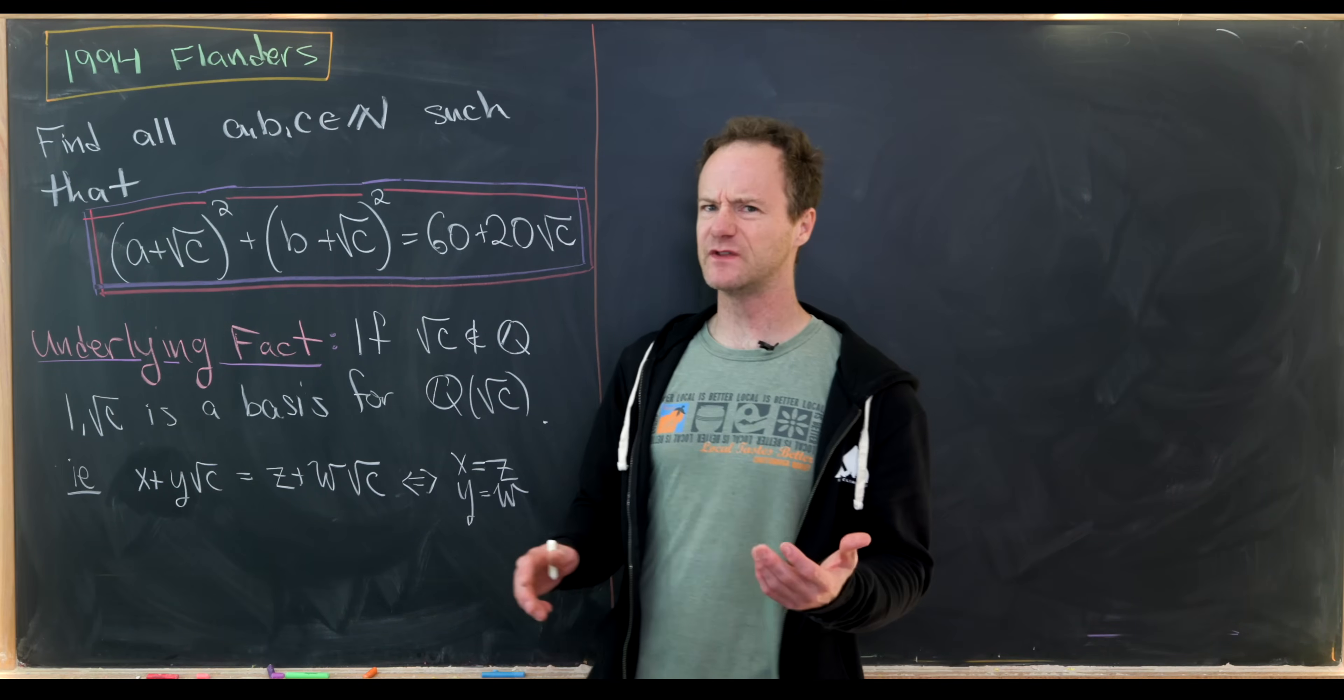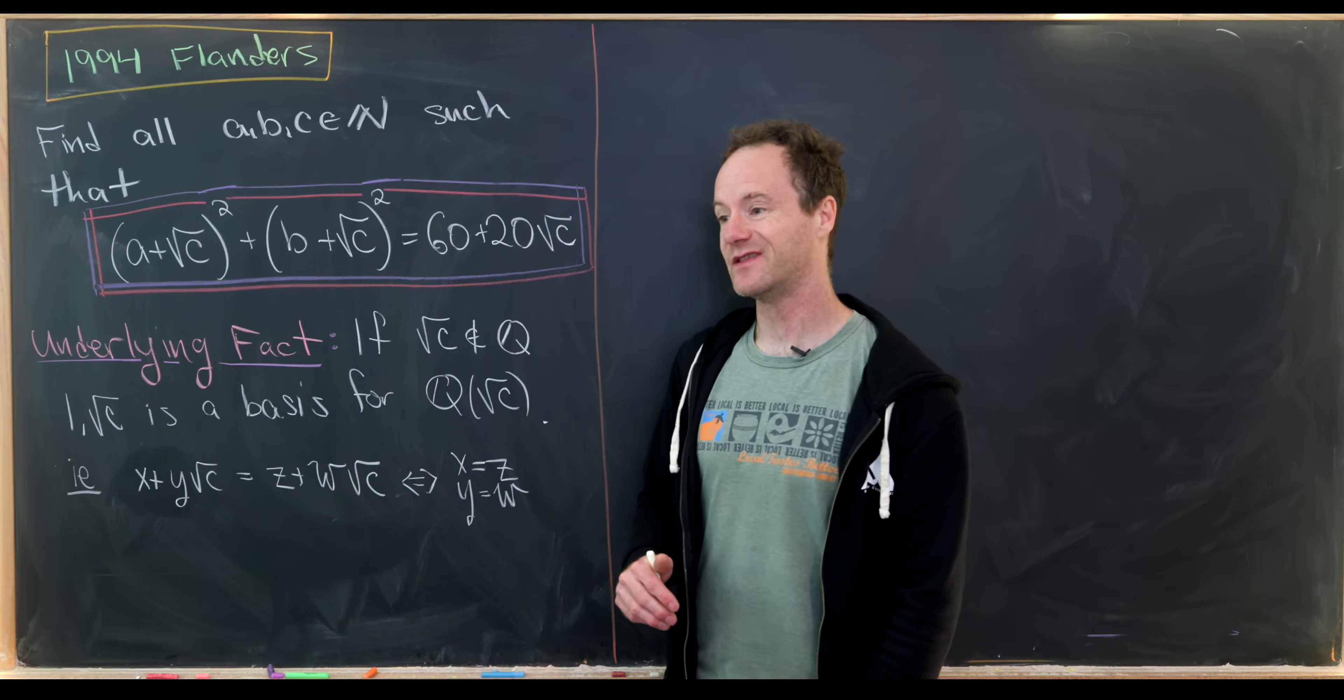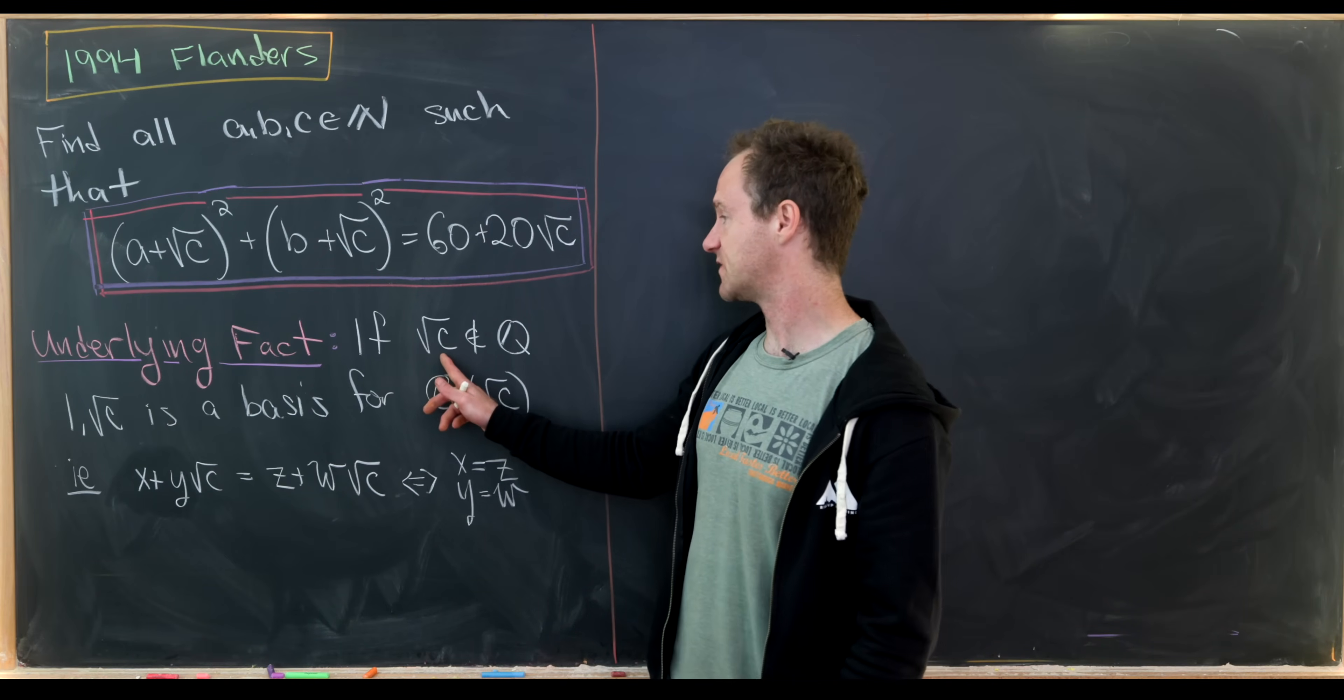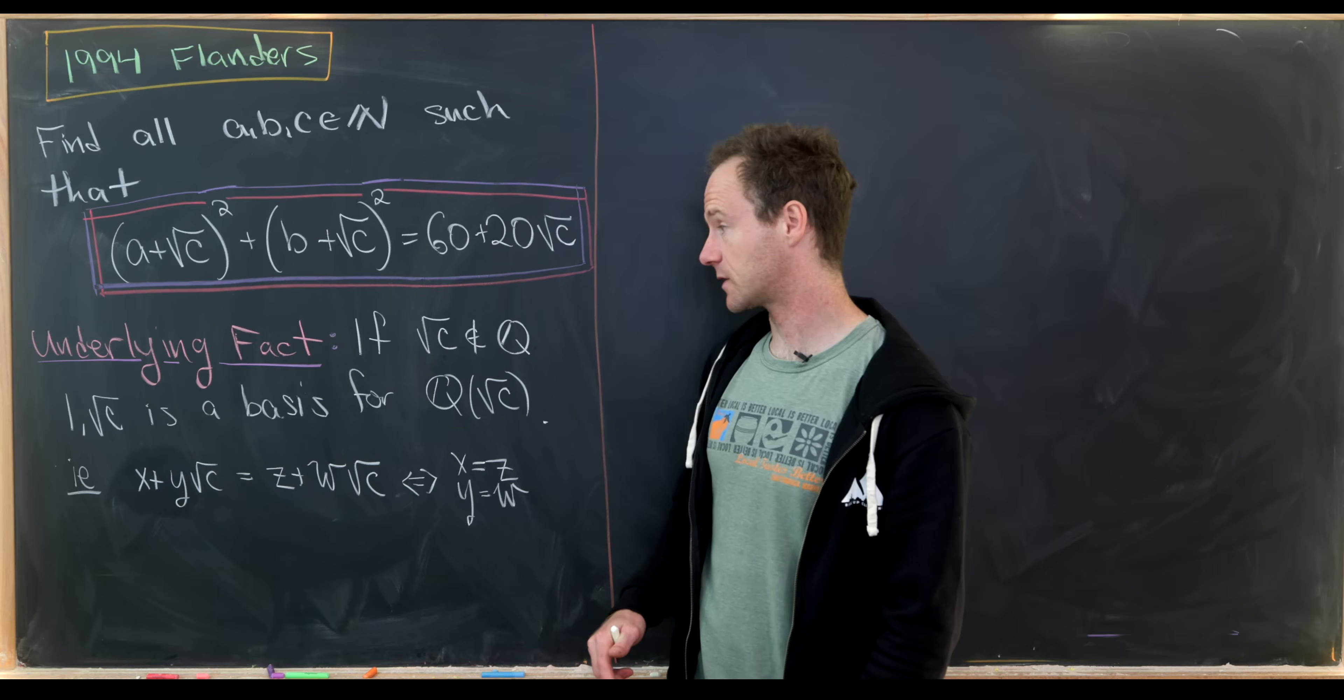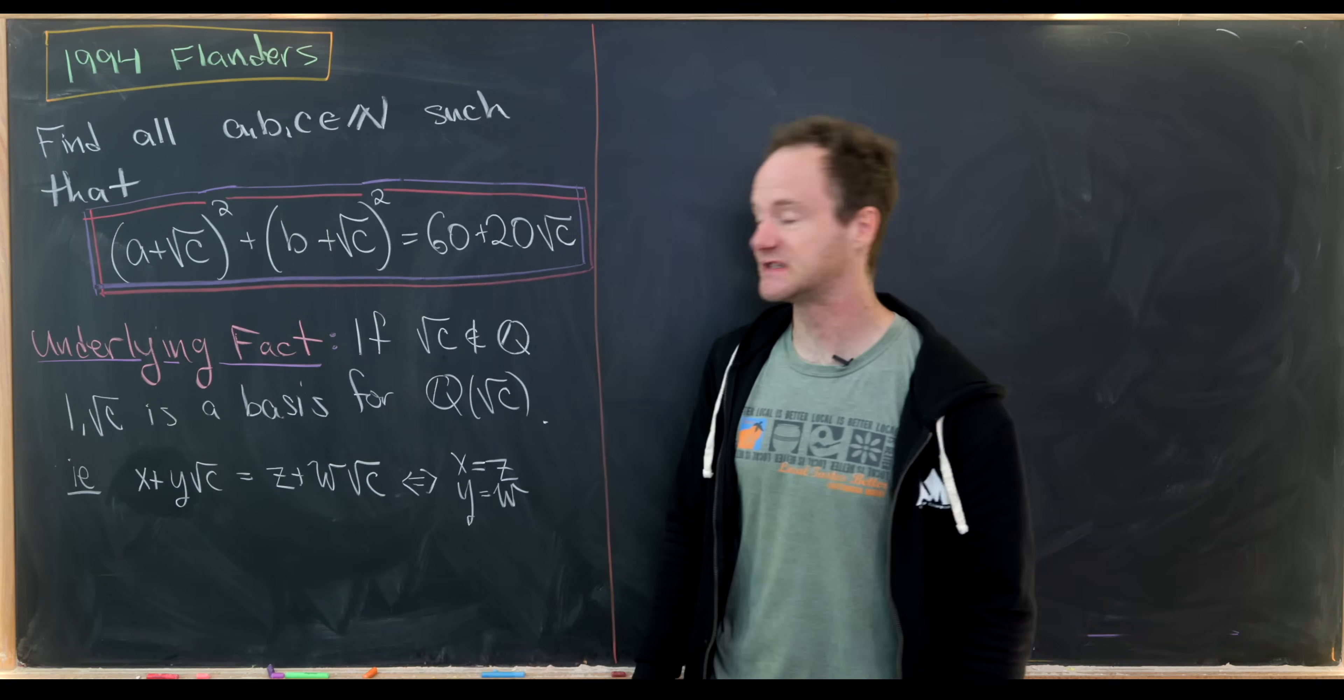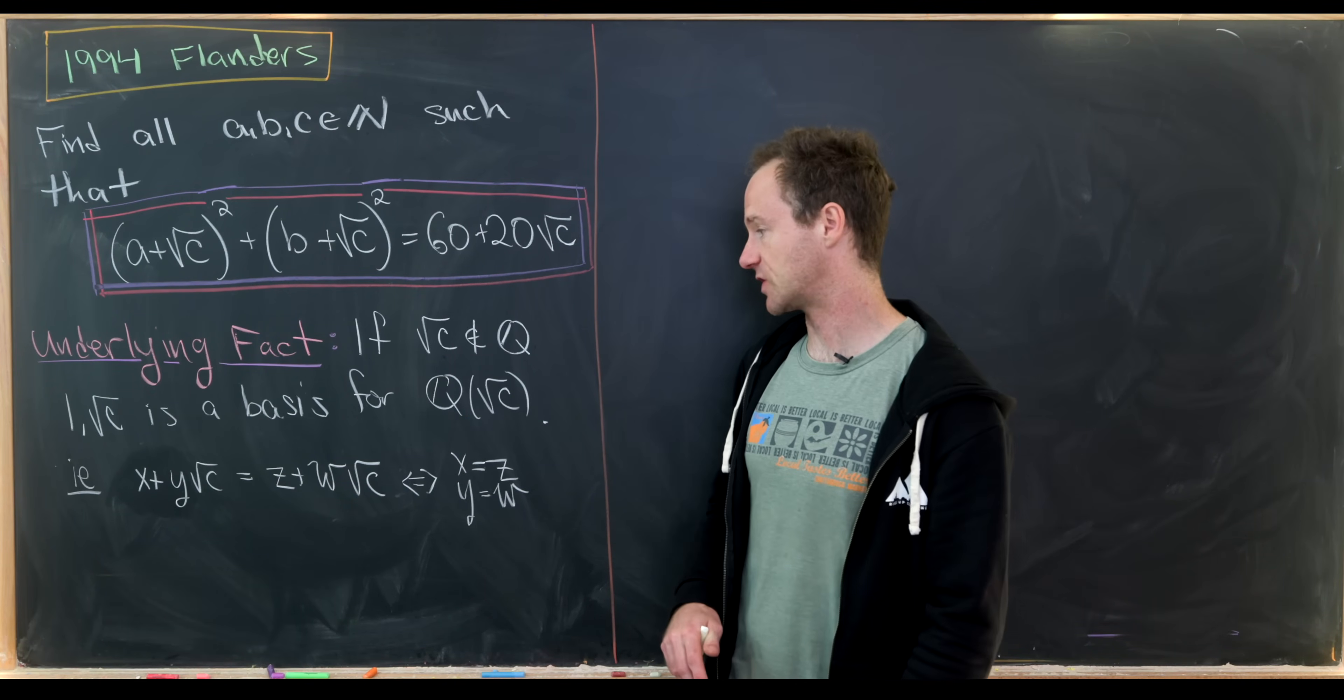We're going to do this as a basic calculation, but I would like to point out that there's an underlying fact here that maybe is of more interest. And that is if the square root of c is not a rational number, in other words c is not a perfect square, then the number one and the square root of c forms a basis for Q adjoined root c as a vector space over Q.